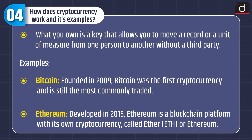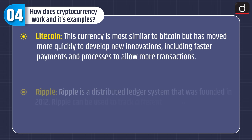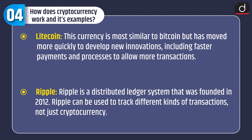Examples include Bitcoin, founded in 2009 — the first cryptocurrency and still the most commonly traded. Ethereum, developed in 2015, is a blockchain platform with its own cryptocurrency called Ether. Litecoin is most similar to Bitcoin but has moved more quickly to develop new innovations including faster payments and processes to allow more transactions. Ripple is a distributed ledger system founded in 2012 that can be used to track different kinds of transactions, not just cryptocurrency.